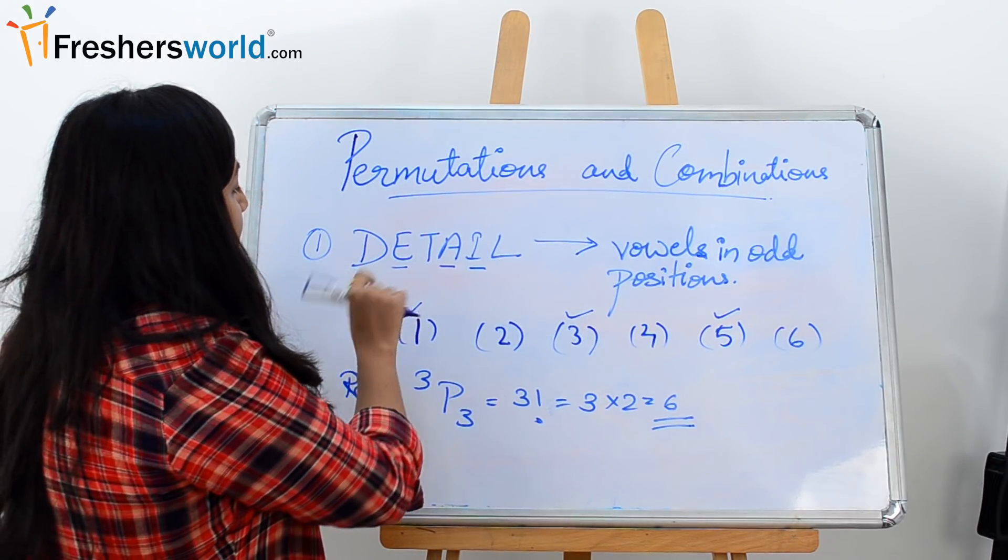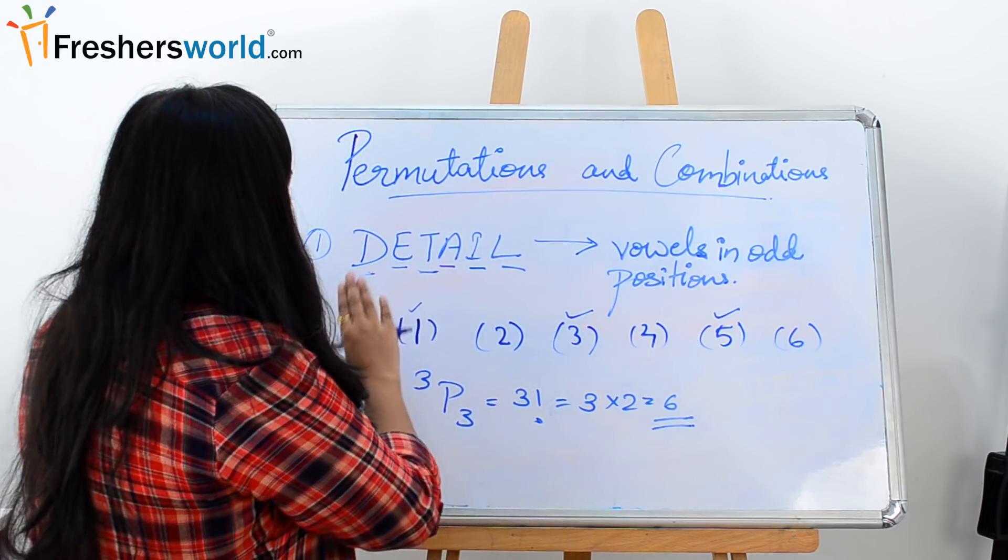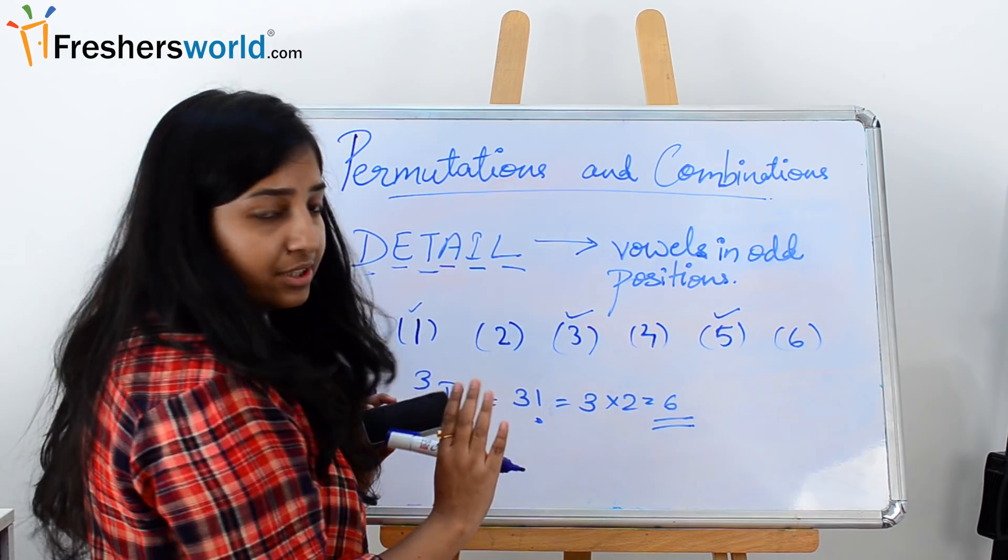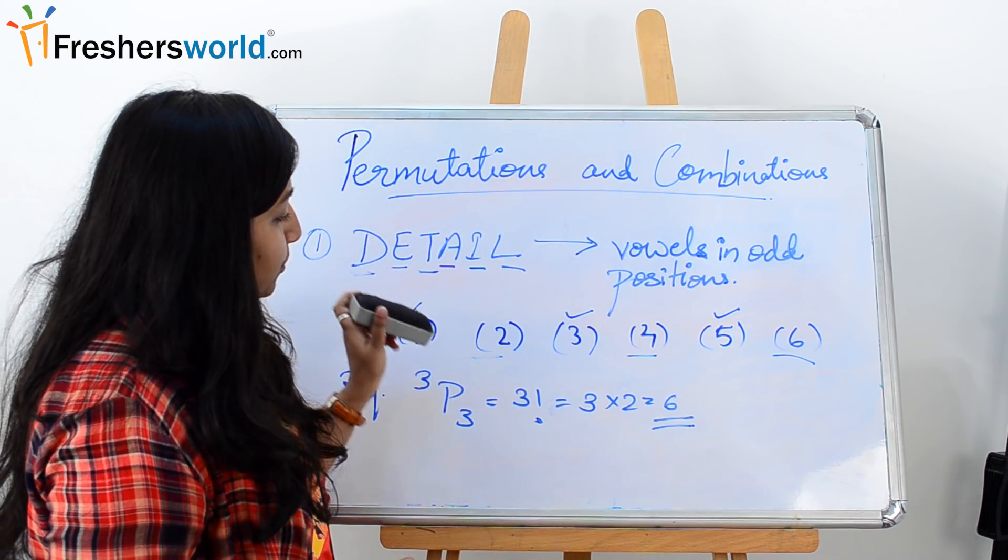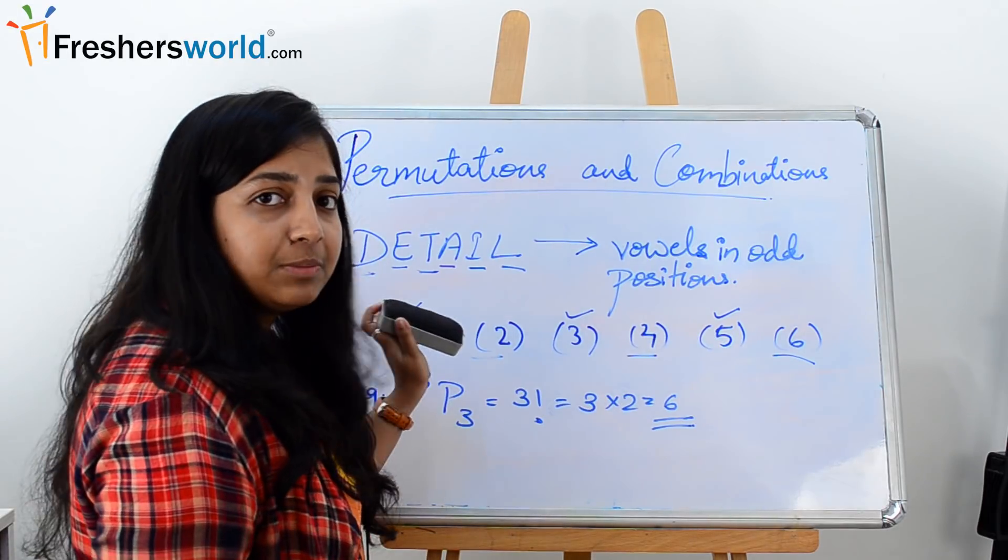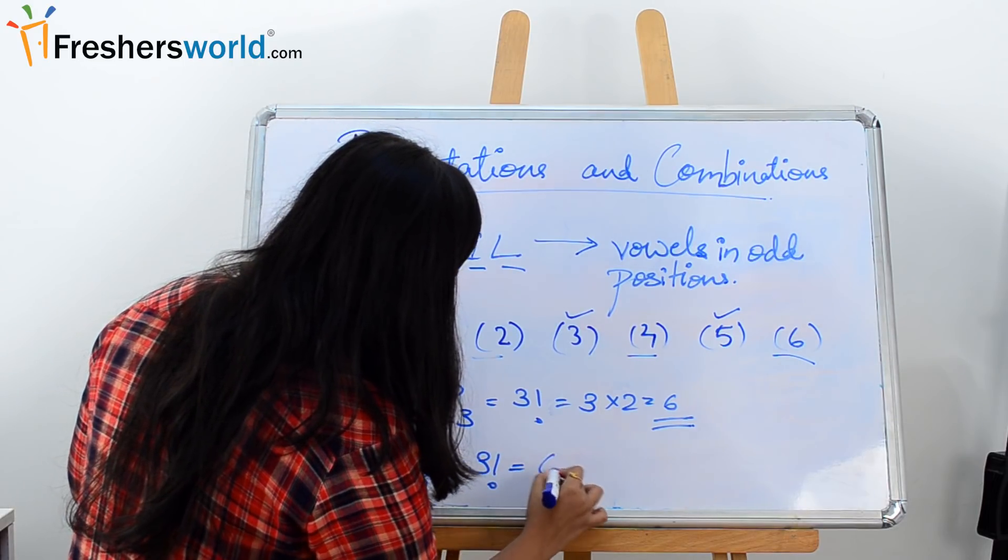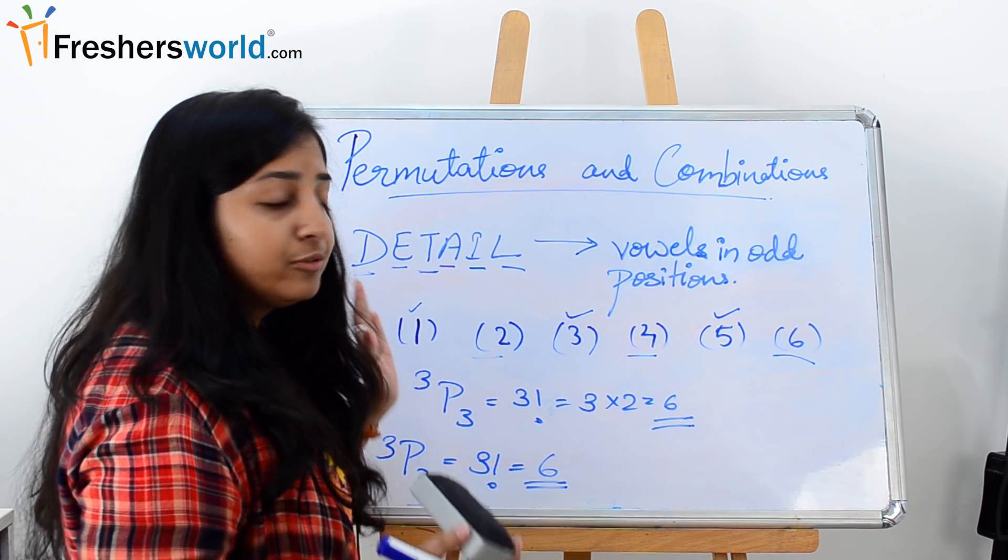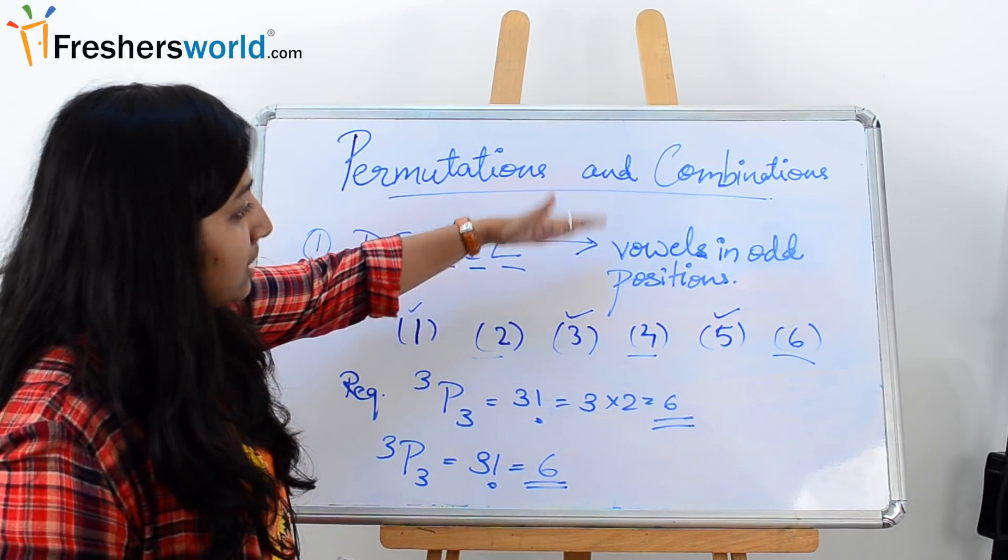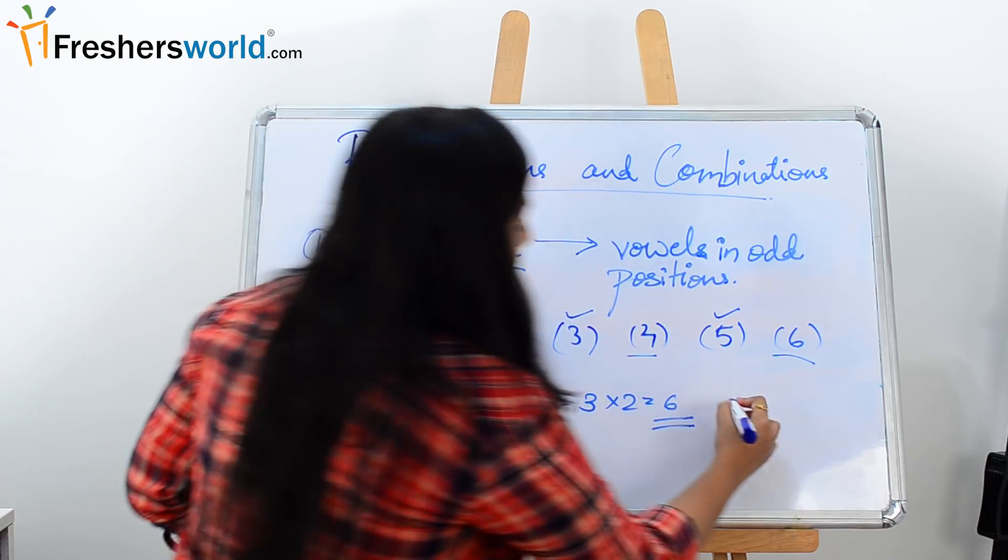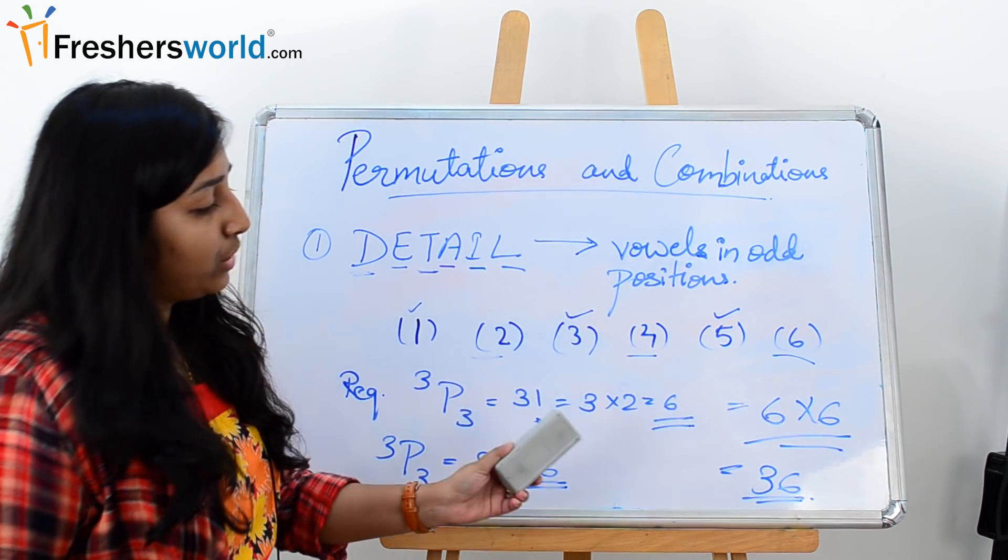Similarly, now what do we have left? The consonants, which are D, T, and L. D, T, and L are to be placed in the rest of the three positions, which is second, fourth, and sixth. So again you see, we have three words and these are to be placed in three different positions. So what will be the permutation for this? Again it would be 3P3, which is 3 factorial, equal to 6. So now the total number of words or total number of permutations for the word DETAIL, condition vowels should be in odd positions, would be 6 into 6, that is 36. So the total number of required permutations is 36.